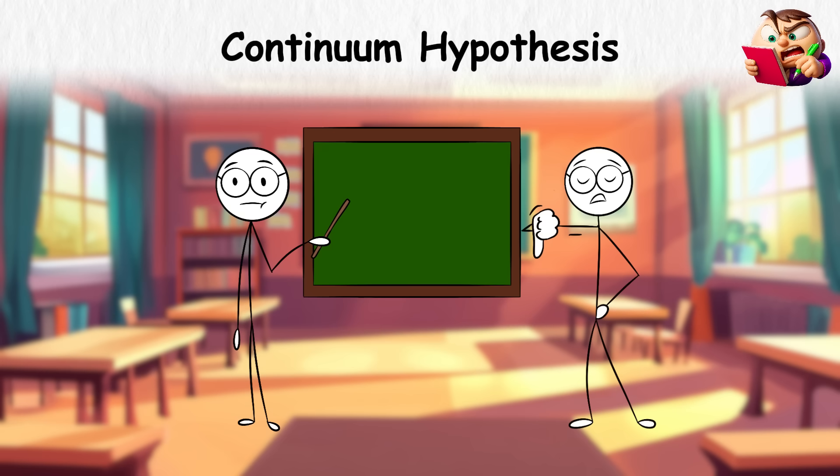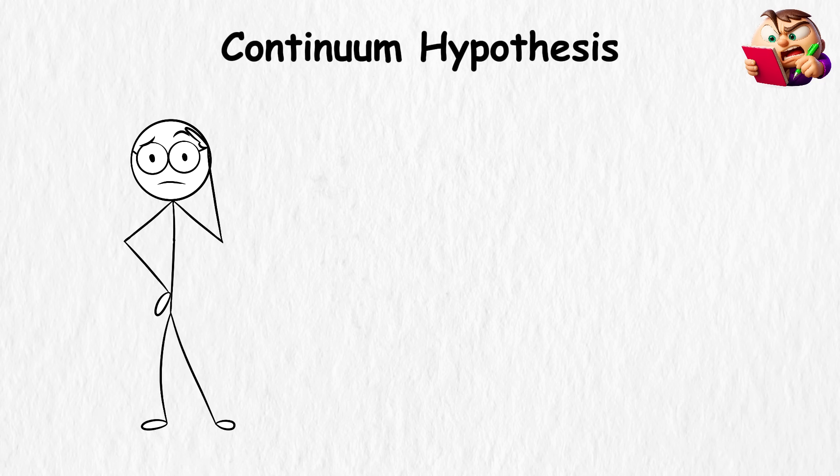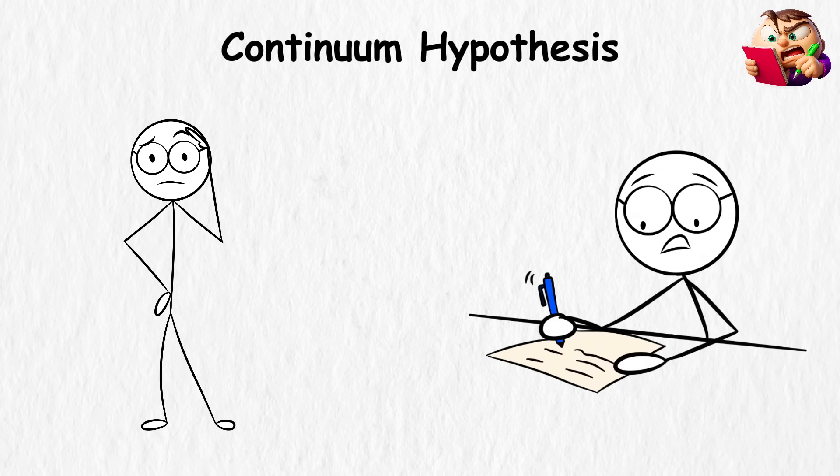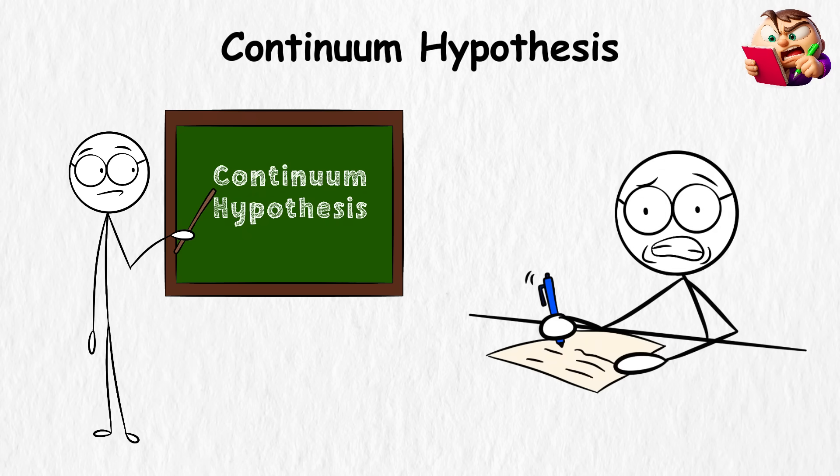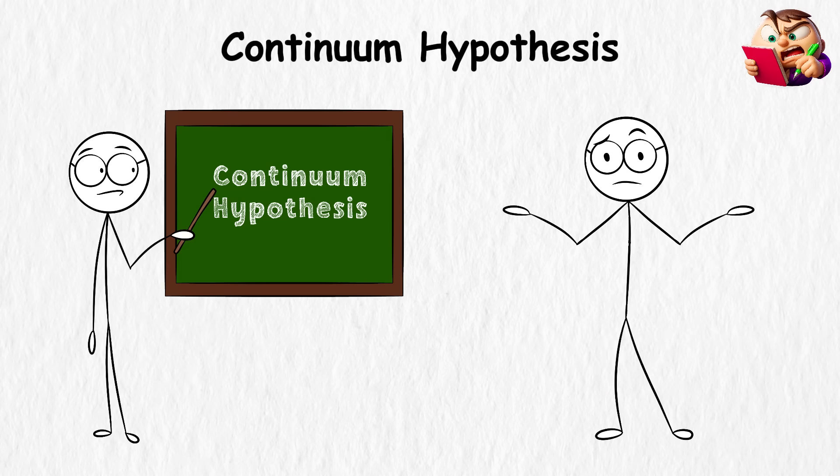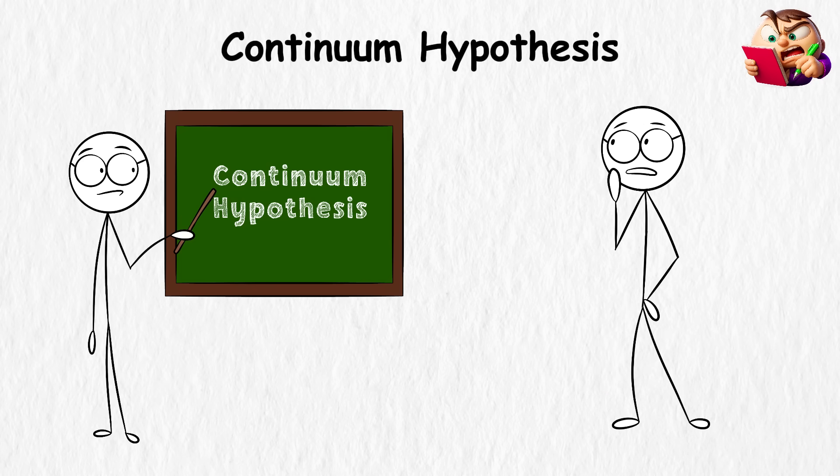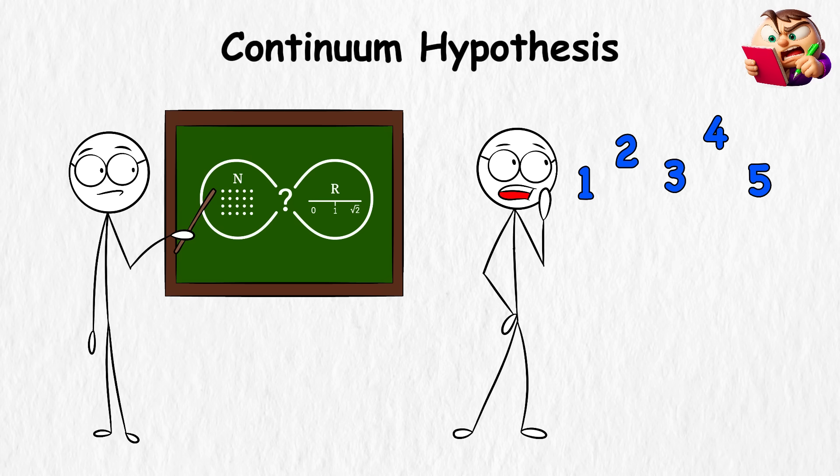But the real numbers, like the decimals between 0 and 1, form a bigger infinity. They're uncountable. Even if you listed numbers forever, you'd miss almost all of them. That's where the continuum hypothesis comes in. It's basically asking, is there a size of infinity that sits in between the infinity of whole numbers and the infinity of the number line? Bigger than counting numbers, but smaller than all the decimals.